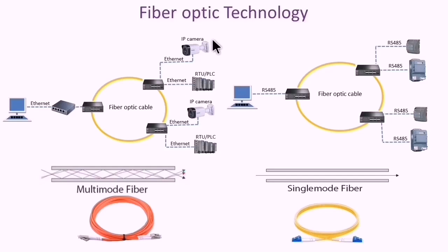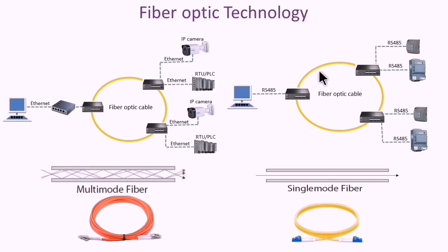This is also applicable to an ethernet link. By using a media converter, the electrical signal will be converted to a light signal which will run through the fiber optic. There are two types of fiber optic cables: multi-mode fiber and single-mode fiber.